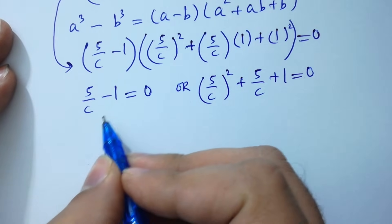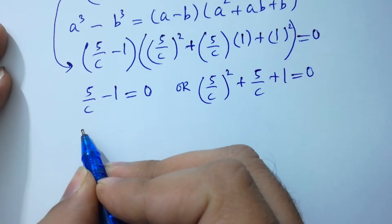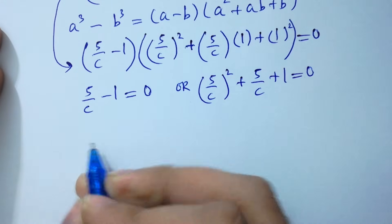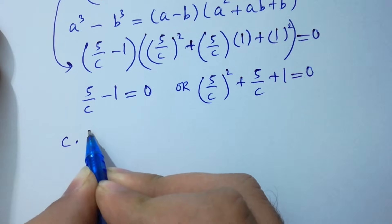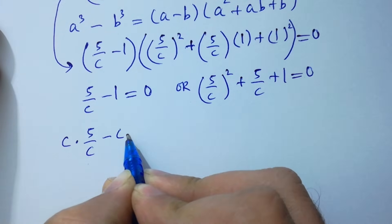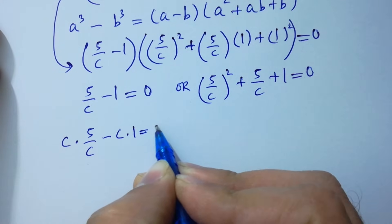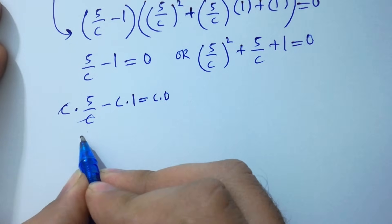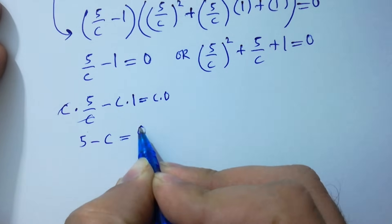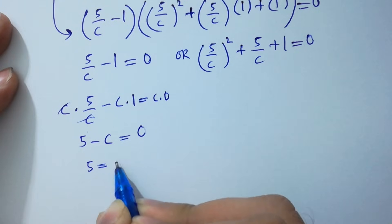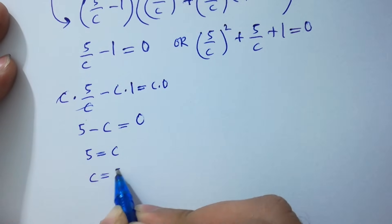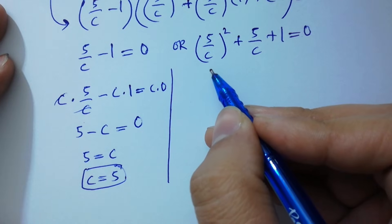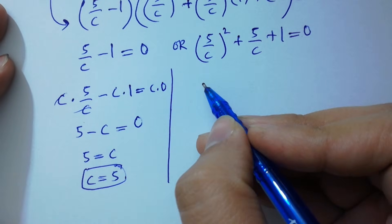If we solve 5 over c minus 1 equals 0, multiply by c on both sides to get rid of c: c times 5 over c minus c times 1 equals c times 0. So c and c will be cancelled, giving us 5 minus c equals 0, so c equals 5.